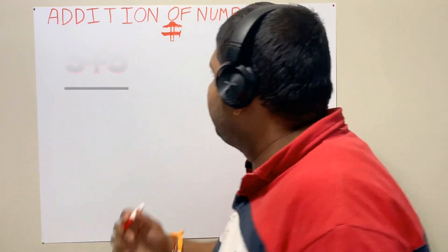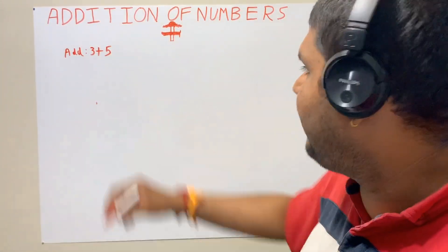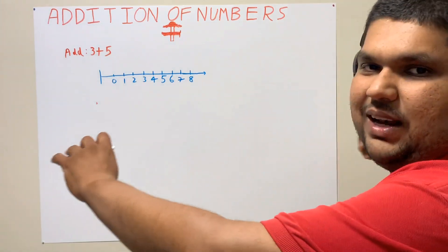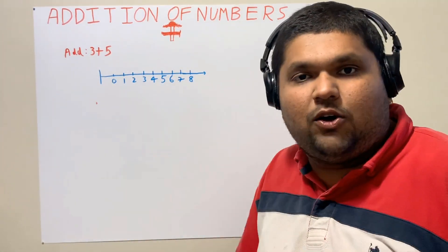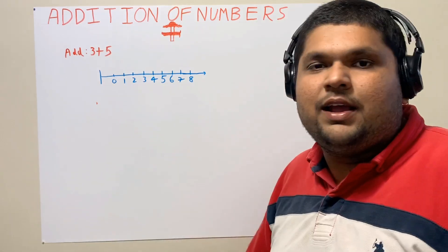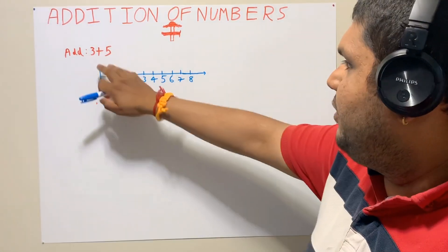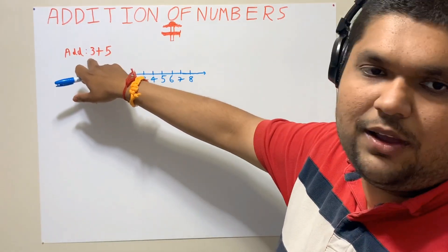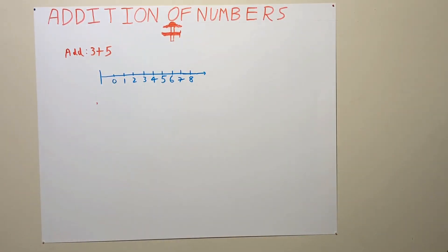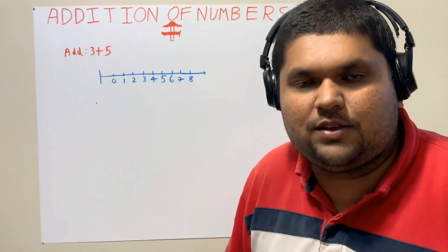Let us start with very basic simple numbers. I want to add two single digit numbers, let's say 3+5. So I'll write add 3+5. Now what I will do is draw a number line. The number line actually has no ending or no beginning, it's everlasting and vast.